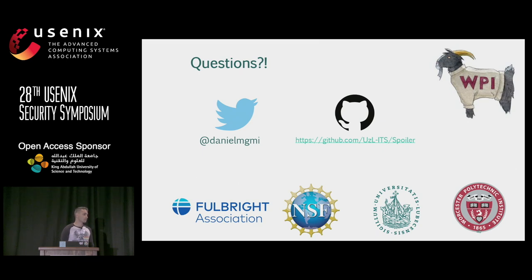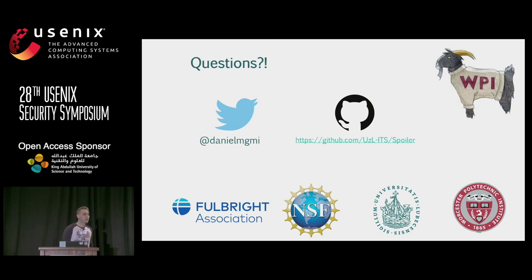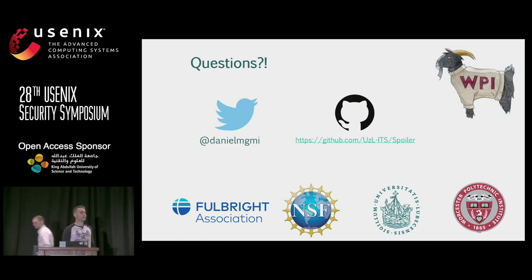Q: My question is about mitigation approaches. Given that memory disambiguation causes overhead and architects use a lot of prediction, short of turning it off, is there any other way to prevent this side channel? A: If we talk about general microarchitecture, I'm not an architect, but I assume there are ways to implement this differently. We couldn't reproduce the same thing on AMD. From a practical aspect, Intel didn't provide any hardware fix or plan to fix this in hardware, but they provided guidance on how to prevent side-channel attacks in software generally.